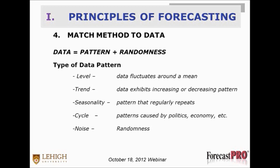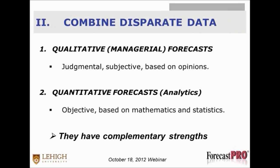What I've shared here are just four of the many principles we have. They may seem simple, but following them is extremely valuable in terms of improving your forecast accuracy. The next strategy I want to talk about is combining disparate data — there's a lot to talk about with each of these areas. When we're talking about disparate data, we're talking about different sources of information. I picked two broad categories that are very different and very useful when combined because they have complementary strengths.